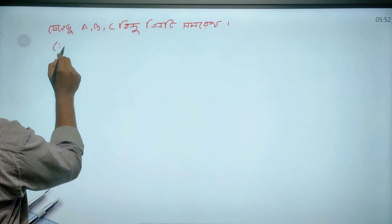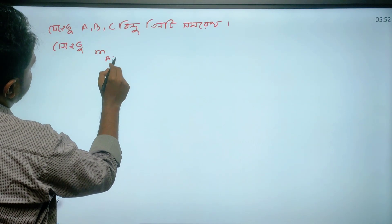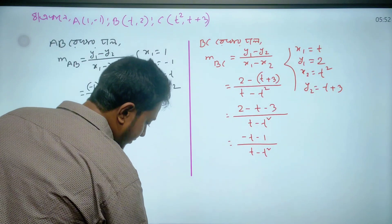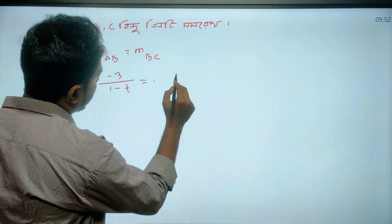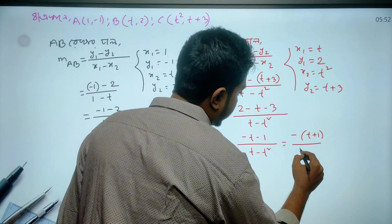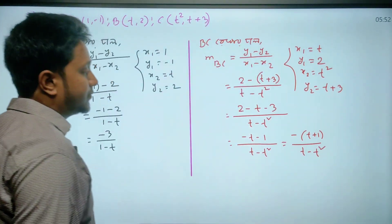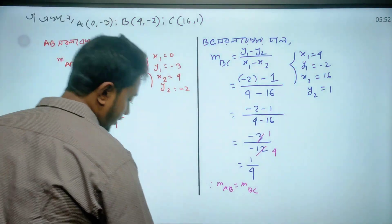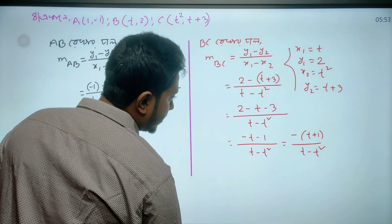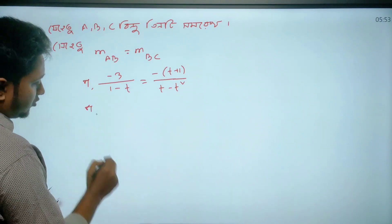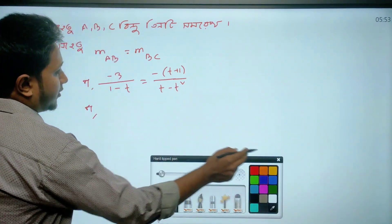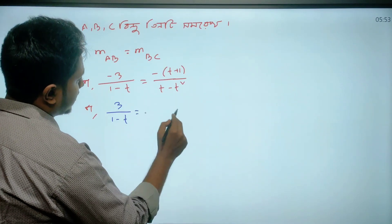Shihetho aamra liqthe paari — m of AB is equals to m of BC. Aekan, m of AB's value aamra kotho — minus 3 divided by 1 minus 3. Taking common: t common ni, t minus t squared, t plus one. Minus minus cancel — cancellation: 1-t, t plus 1.